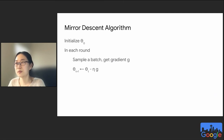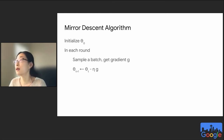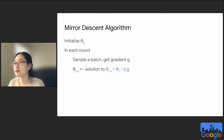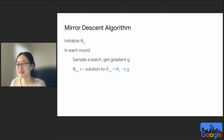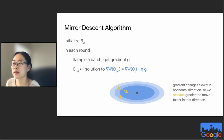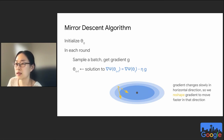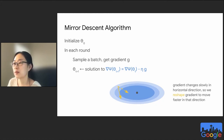In gradient descent, we initialize the model and for each round sample a batch, compute the gradient, and update the model with gradient times learning rate eta. Another way to view the update is that the new model theta equals theta_t minus eta times g. Mirror descent is achieved by replacing the model parameterization with the function psi applied to theta. This reshapes the gradient so it moves faster in the relevant direction — the optimization path changes from the solid to the dashed line, and convergence is faster because there is less bouncing around.